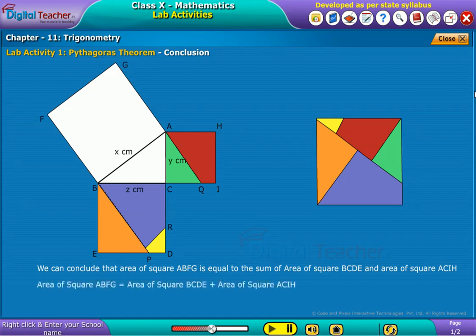Area of square ABFG is equal to the area of square BCDE plus area of square ACIH. That is, AB square is equal to BC square plus AC square.